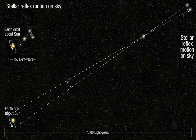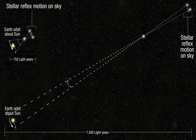Diurnal parallax is a parallax that varies with rotation of the Earth or with difference of location on the Earth. The Moon and, to a smaller extent, the terrestrial planets or asteroids seen from different viewing positions on the Earth at one given moment can appear differently placed against the background of fixed stars.